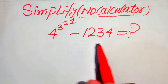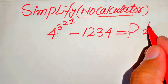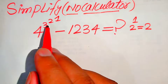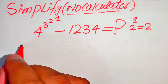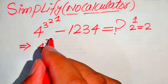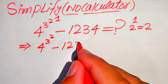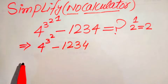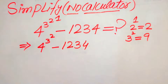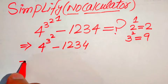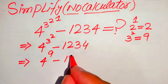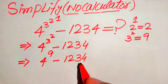The very first thing we do is note that this is 2 to the power of 1, and we know that 2 to the power of 1 equals 2. Similarly, we have 3 to the power of 2. After applying 2^1 = 2, the expression becomes 4 to the power of 3 to the power of 2 minus 1234. We know that 3 squared equals 9, so we replace 3^2 with 9.